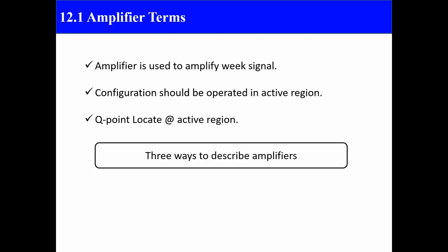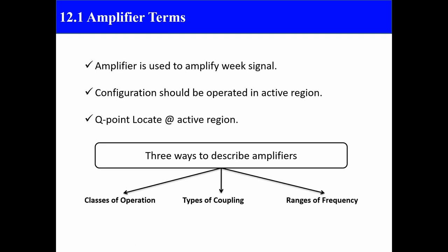There are three ways to describe amplifiers. The first is based on classes of operation, meaning which class the power amplifier belongs to. The second is types of coupling. The third is range of frequency. All three types will be discussed in the next slide.